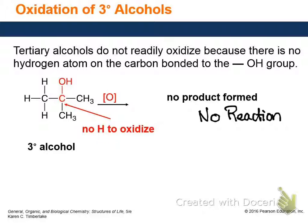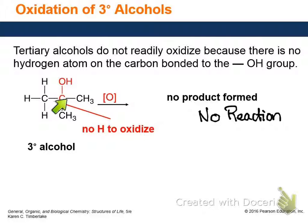How come for the tertiary alcohol we're not able to take away the H and the OH? Because you have to take an H from this carbon in order to make a double bond or another bond to oxygen. Oxidation means more bonds to oxygen, so I have to replace something with an oxygen. These carbons can't have their substituents replaced by oxygen because carbon can only make four bonds, and this carbon already has four bonds.